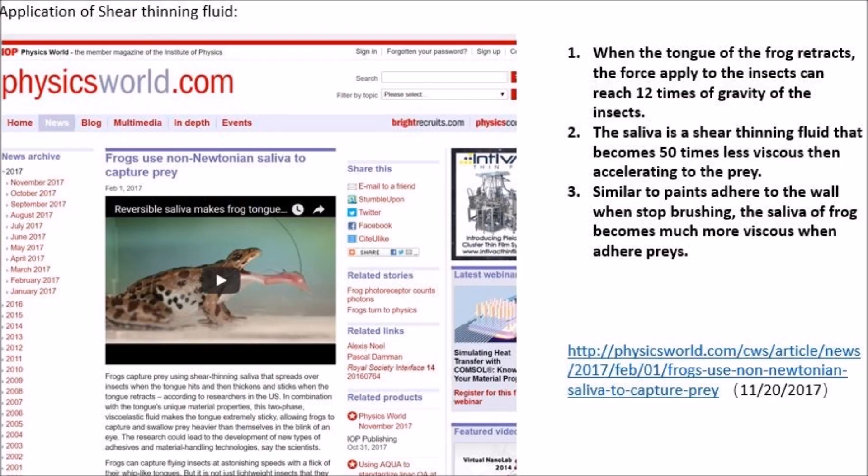An example of a shear thinning fluid would be the saliva of frogs. The frogs' tongues are able to stick to the prey because their shear thinning saliva is extremely viscous when still, and becomes 50 times less viscous when accelerating. Scientists have calculated that when the tongue is retracting, the force applied on the insect could reach 12 times that of gravity. This is also similar to paint, which adheres to the wall when you are not brushing it.